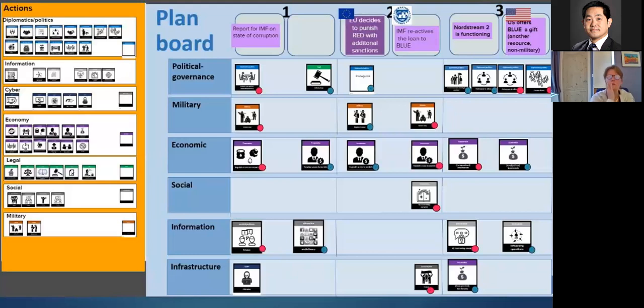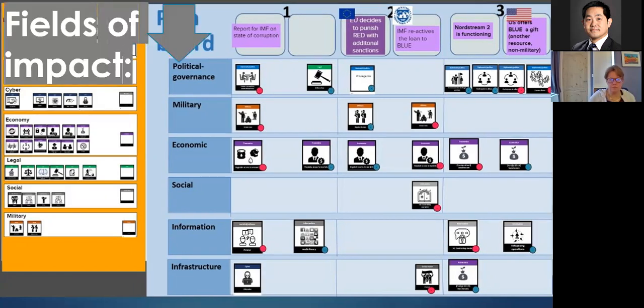So for those with a bit of military background here, we have icons for actions, which are in the DIME framework, DIME or DIMEFIL diplomatic information. The military is below your economy, legal, and there's a bit of social, which falls out of the DIME. They're empty icons to allow players for full freedom. Then here we have the fields of impact. And in the military terminology, you know, political, military, economic, social information and infrastructure. And what people do is they play out their actions in the fields of impact. Like for instance, you have a field of impact infrastructure, and here someone is playing a cyber action. It's using the information domain to hack into the infrastructure.